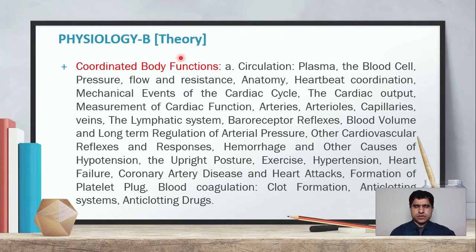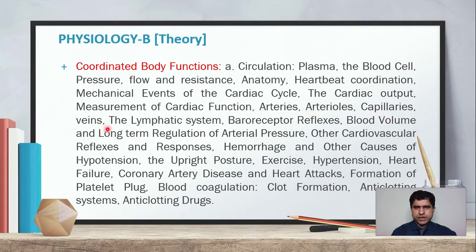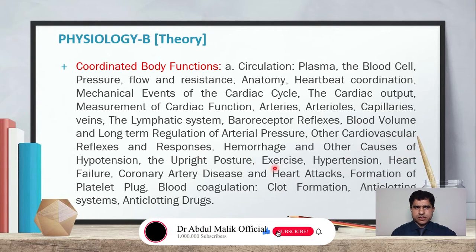Now we go towards Physiology B. The theory has three credit hours and is taught in the second semester. Coordinated body functions — subheading A is circulation, covering plasma, blood cells, pressure, flow and resistance, anatomy, heartbeat coordination, mechanical events of the cardiac cycle, cardiac output, measurements of cardiac function, arteries, arterioles, capillaries, veins, the lymphatic system, baroreflexes, blood volume and long-term regulation of arterial pressure, hemorrhage and other causes of hypertension, upright posture, exercise, hypertension, heart failure, coronary artery disease and heart attacks, platelet plug formation, blood coagulation, clot formation, anti-clotting systems, and anti-clotting drugs.